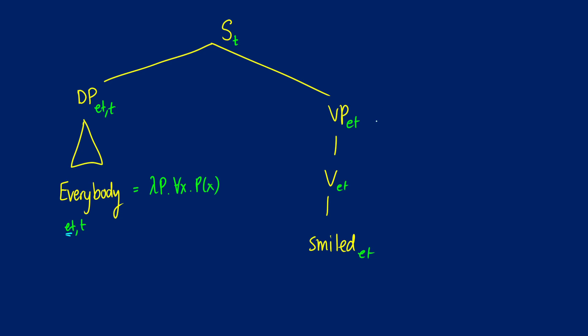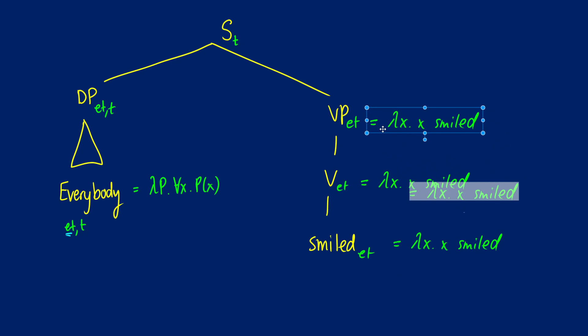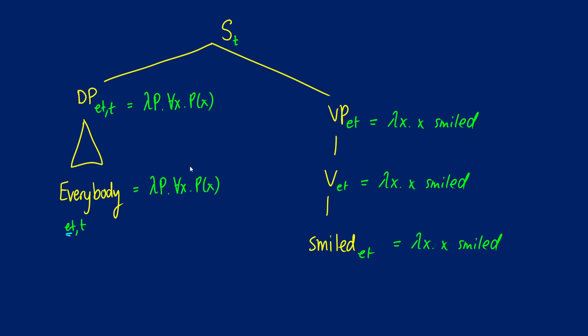Instead of using the verb phrase as the function and the determiner phrase as the argument — with E going into ET — we're doing it the other way around. So let's see how this applies. 'Smiled' is going to be lambda X dot X smiled, and we're going to copy that up the tree.